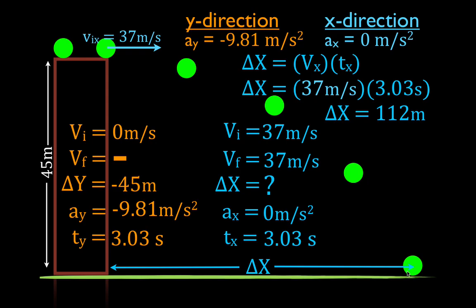It takes 3.03 seconds to do that. Remember: the acceleration in the y-direction is free fall at minus 9.81 meters per second squared; the acceleration in the x-direction is zero because the forces are balanced; and the time it takes in the y-direction and the time in the x-direction are the same. Follow those steps and you can solve this type of problem.